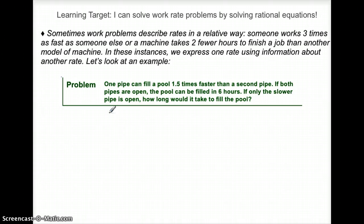One pipe can fill a pool 1.5 times faster than a second pipe. If both pipes are open, the pool can be filled in 6 hours. If only the slower pipe is open, how long would it take to fill the pool?